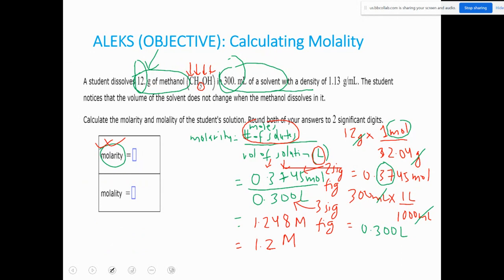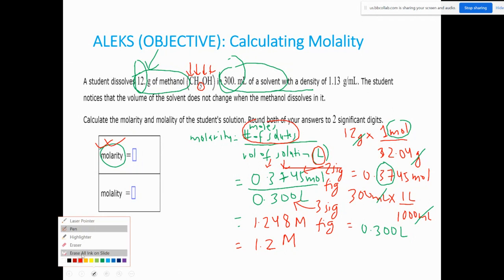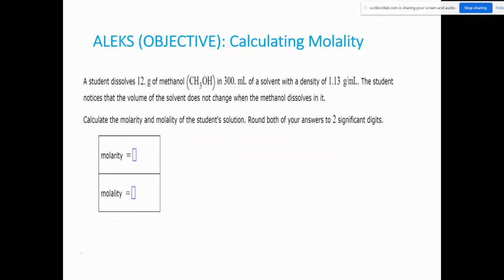I hope this makes sense — it's more of a review from CHEM 115. Make sure you try it yourself on a plain piece of paper without looking at my work first. Now let's move on to molality. The molality formula is: molality equals moles of solute per kilogram of solvent.